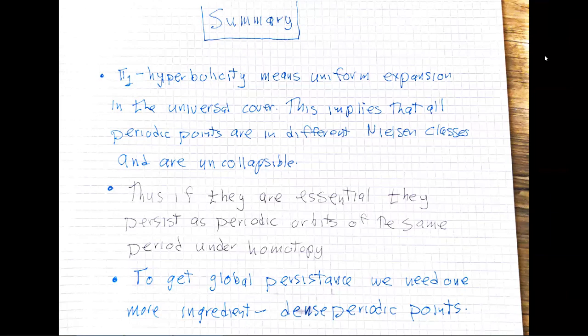Pi-1 hyperbolicity means in the covering space things were expanding uniformly, or if it was a homeomorphism, expanding and contracting. From the definition of Nielsen class, that means we can only fix at most a single point by a lift. So all the periodic points of all iterates are in different Nielsen classes. It also means they're all uncollapsible, meaning there are no period-dividing bifurcations. This feeds into the fundamental theorem of Nielsen theory: if Nielsen classes are uncollapsible and essential with non-zero indices, they all persist under homotopy.